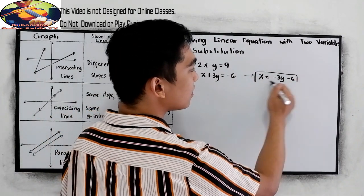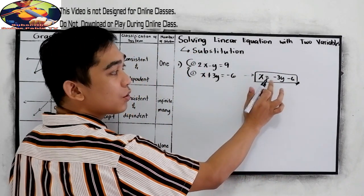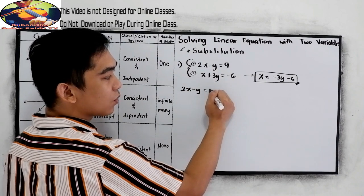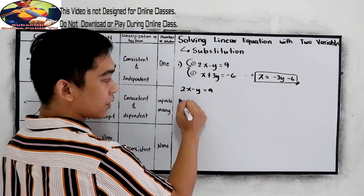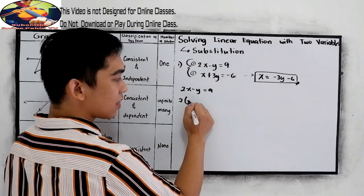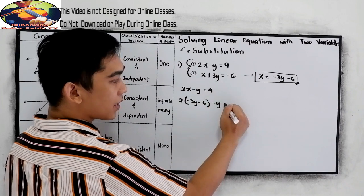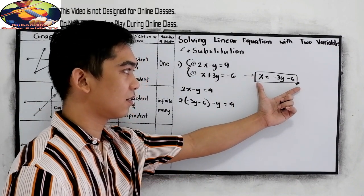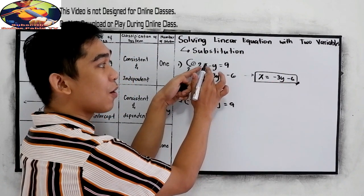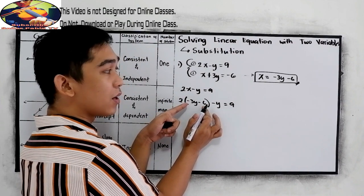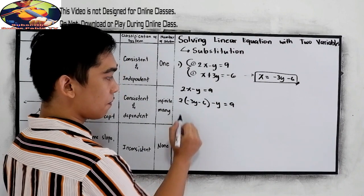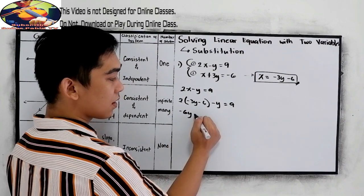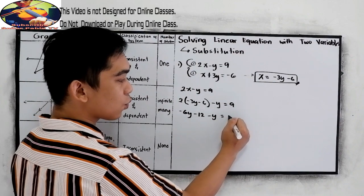Now, let us find first the value of x. Let us use equation number 2. So this is also the same as x is equal to negative 3y minus 6. After getting the value for x, we need to substitute into equation number 1. So equation 1 is 2x minus y is equal to 9. We have a value for x, so 2 times (negative 3y minus 6), minus y is equal to 9. Now distribute: 2 times negative 3y is negative 6y, and 2 times negative 6 is negative 12. So we have negative 6y minus 12 minus y is equal to 9.